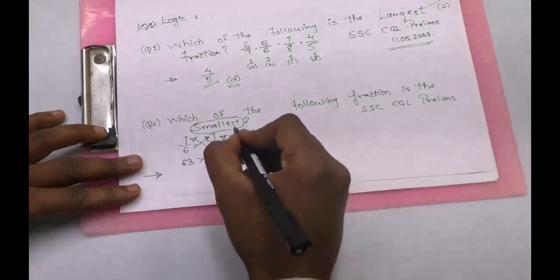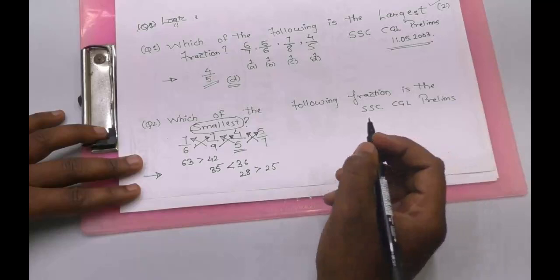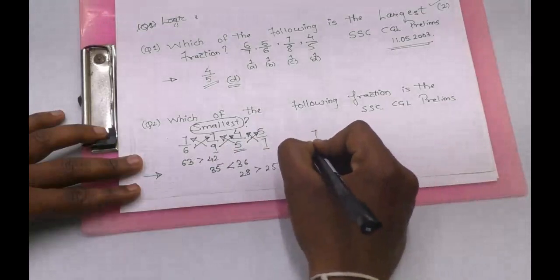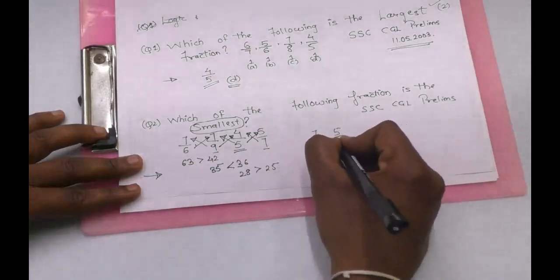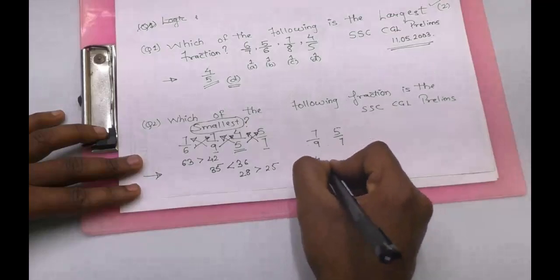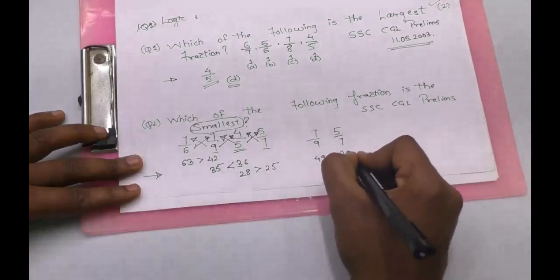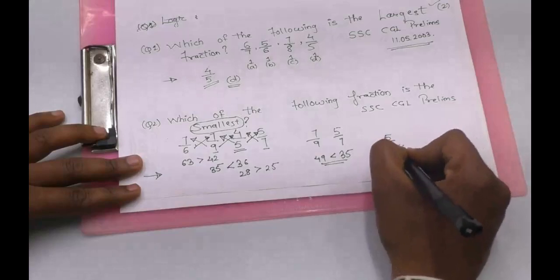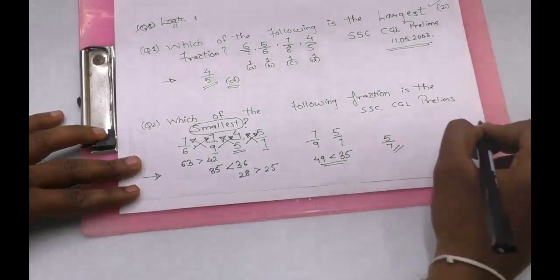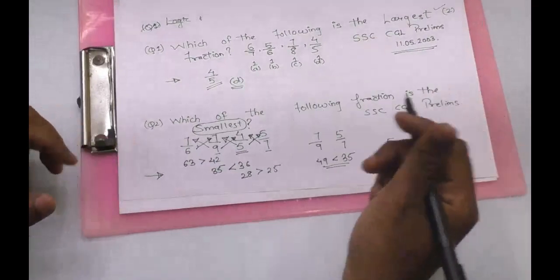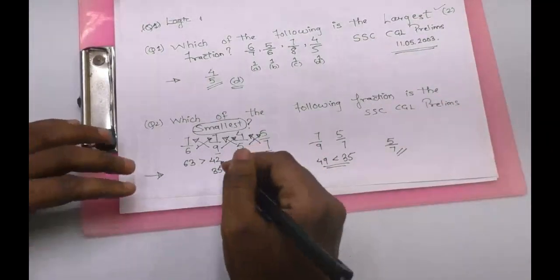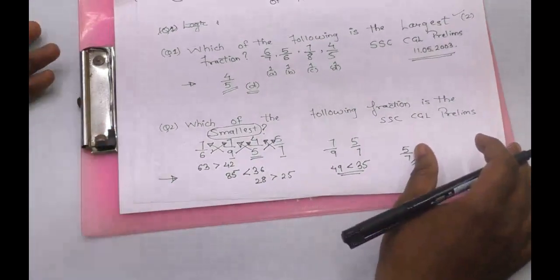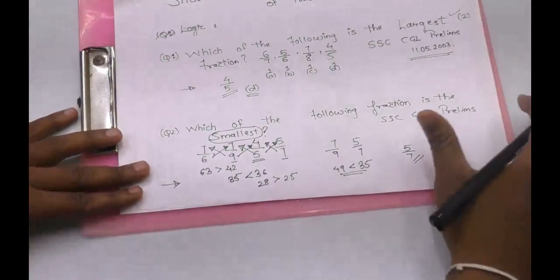This fraction is bigger in both cases, so now we only have to compare 7 by 9 and 5 by 7, since we don't have a direct relation between them. 7 into 7 is 49, and 9 into 5 is 45. In 10 to 20 seconds, you can solve this kind of question. These are the easiest questions in the number series, and with enough practice you can solve them directly by inspection — these are easy marks in any competition.